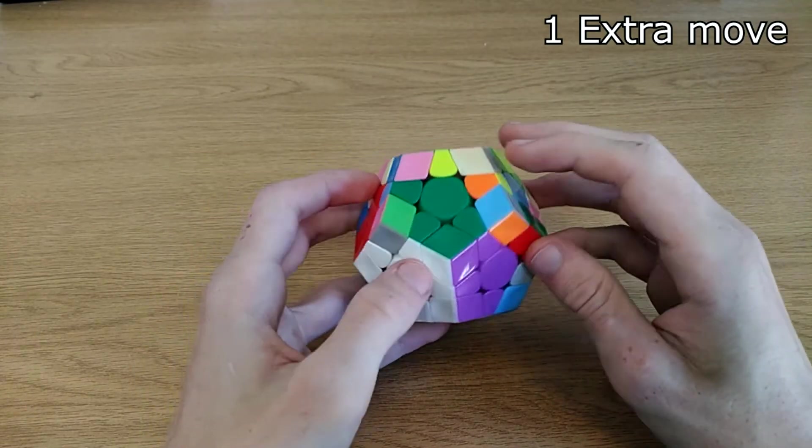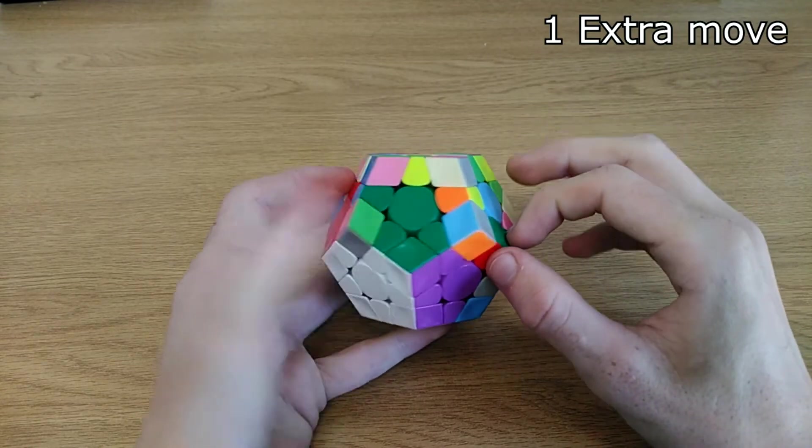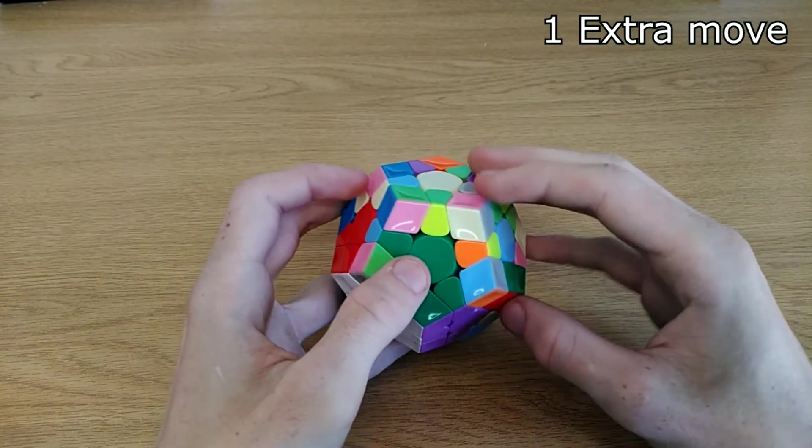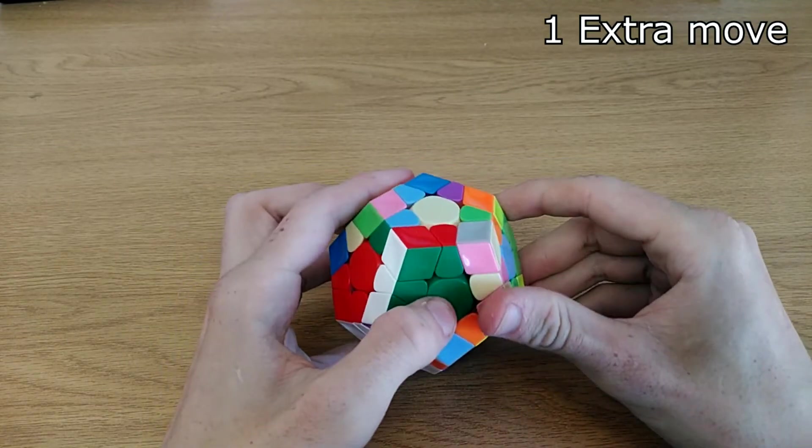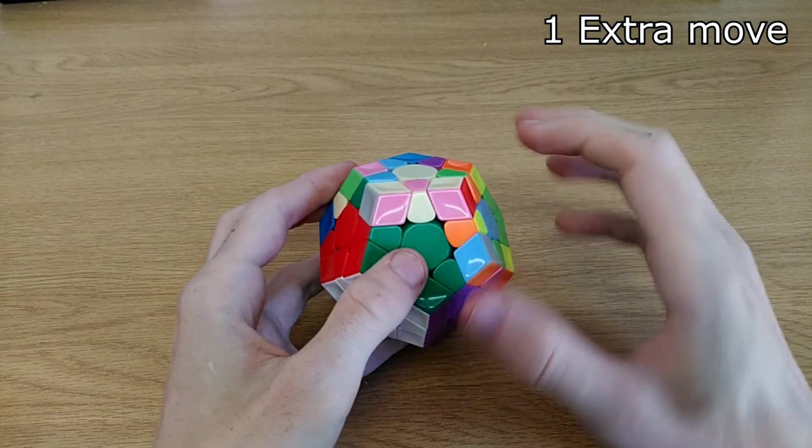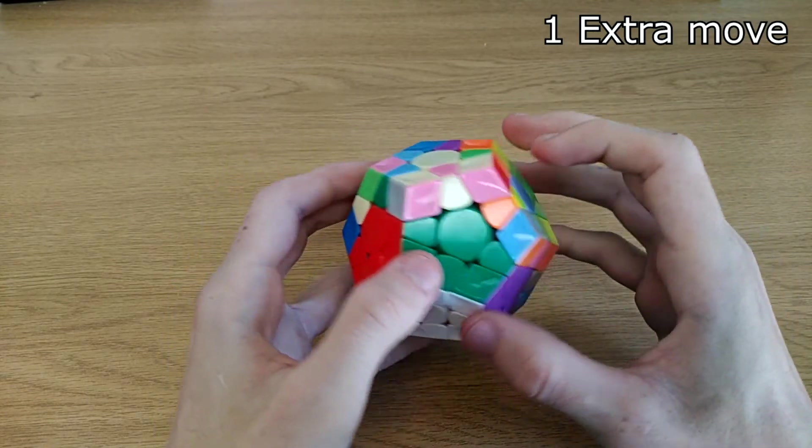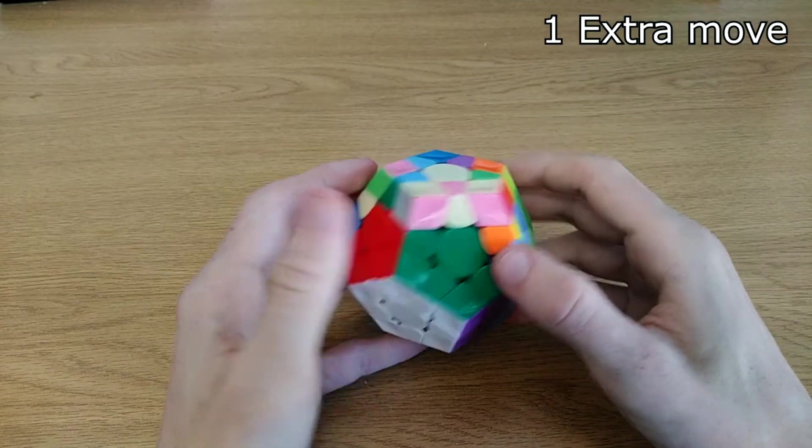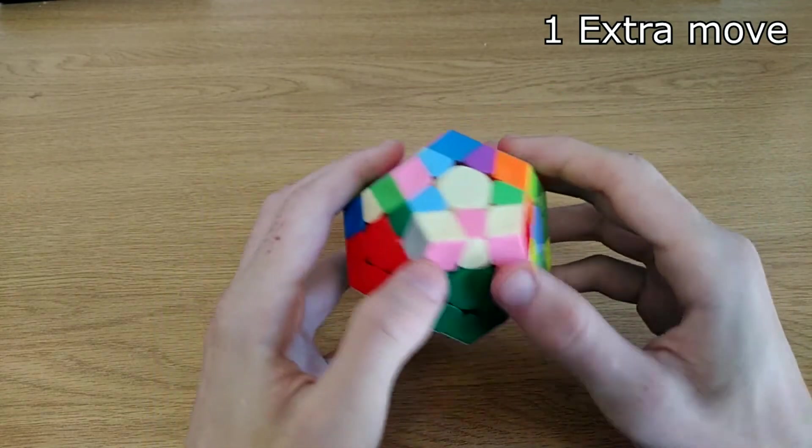And the last formula I quickly want to show, which is also helpful, is for instance, if you have this pair you want to insert here, instead of bringing it over here and rotating and inserting, you can again do an F move and then insert it like that. So there's many different ways that this specific F2L case can come up, and it's always useful to do that F move because it saves you one move, and it actually does save a lot of time.